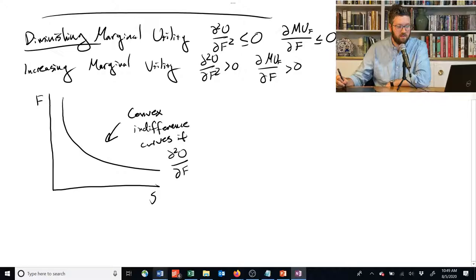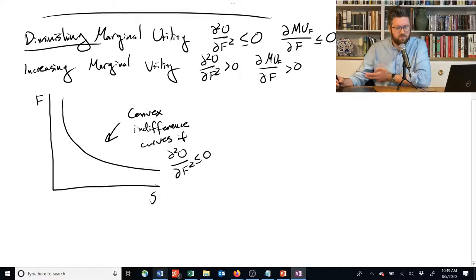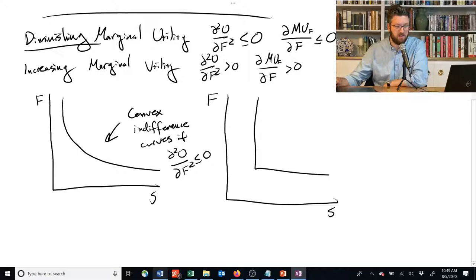So what do I mean by convex indifference curves? Well, let me try and draw the range of possibilities, anything from here to here, anything that can kind of fit in that box is convex. So for example, this would be convex. Something that has a really hard right angle would be convex, something that's almost linear, even something that is linear would technically be convex.